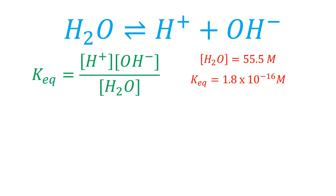So if we substitute these values in the equation, then solve for the product of the ion concentration, we have that the concentration of H plus by the concentration of OH minus is always equal to 1 times 10 to the minus 14 molar squared.